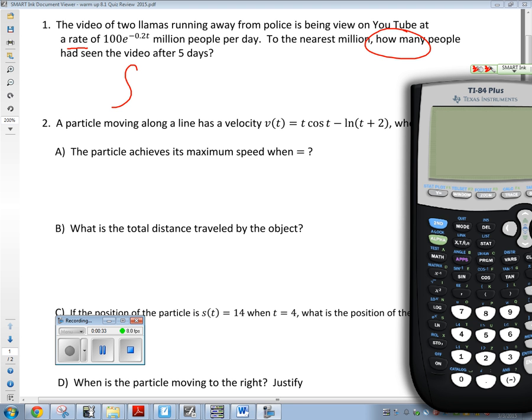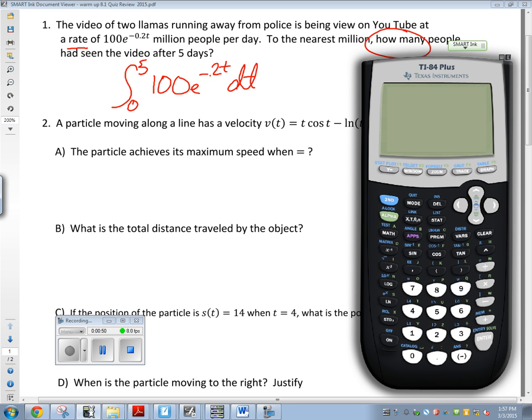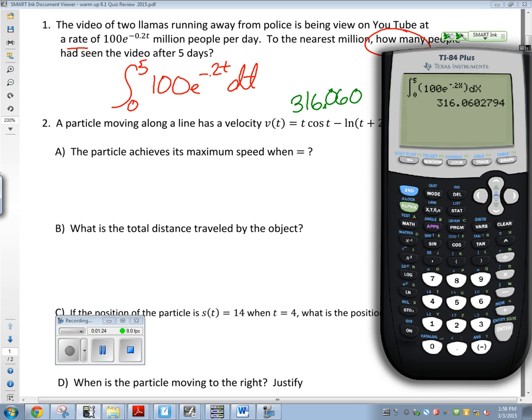From when to when are we going to integrate? From zero days to five days. Any time you are given some sort of rate and you want to know how much of something happened, you're going to use integration. So math 9, I'm going to integrate from zero to five. I'm going to type in my equation, 100e^(-0.2t) dt. I hit enter. That will tell me the answer: 316.060.